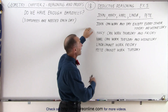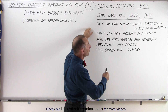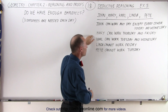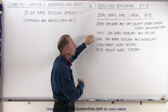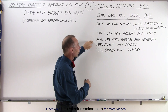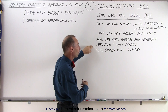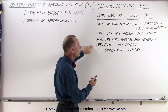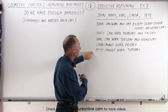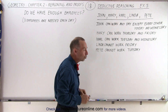John can work any day except every other Monday and every other Wednesday. Mary can work Thursday and Friday only. Carl can work Tuesday and Wednesday only. Linda can work every day of the week except Friday. And Pete can work every day of the week except Tuesday.